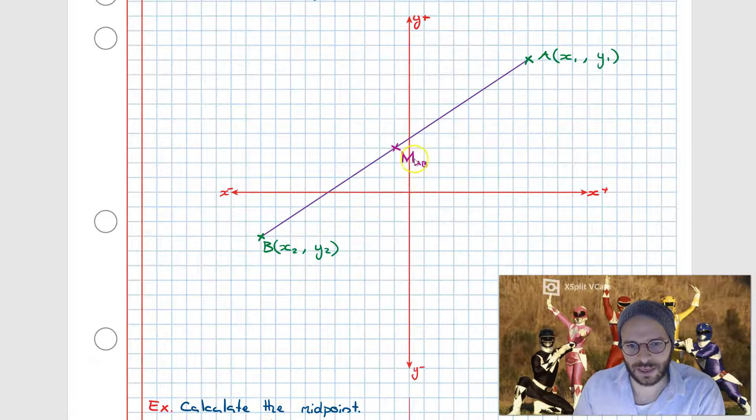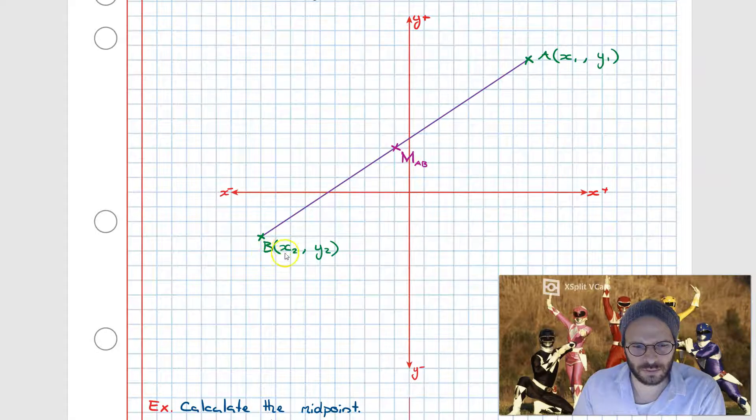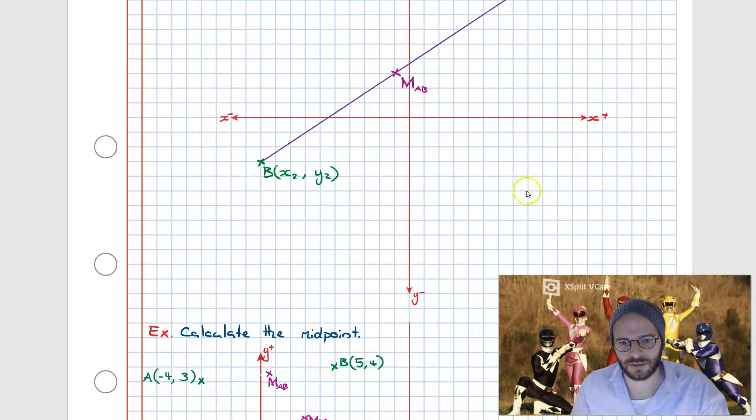Now to be able to calculate M_AB, all we need to do is we take the average of points A and points B. Now if point A is defined as coordinates x1 and y1, and point B is defined as the coordinates x2 and y2, all we need to do is add the coordinates together, so add the x's together and the y's together, and then divide it by 2 and that will give us the average.